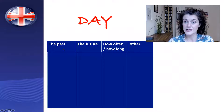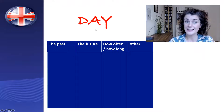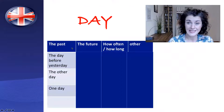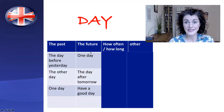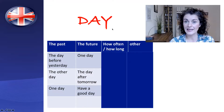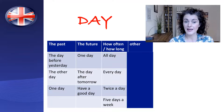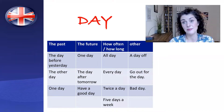I've organised these phrases into categories: past, future, how often or how long, and other. Phrases referring to the past: the day before yesterday, the other day, or one day. Phrases referring to the future: one day, the day after tomorrow, or have a good day. Phrases for how often or how long: all day, every day, twice a day, five days a week. Other phrases: a day off, go out for the day, bad day.